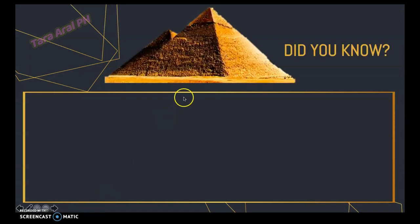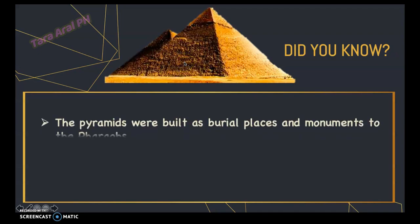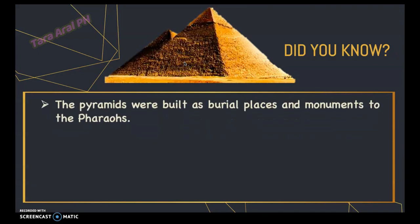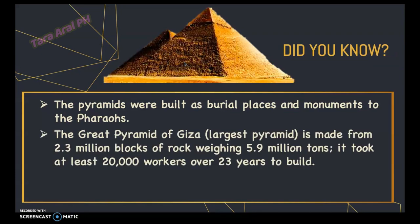Good day everyone. Let's start our lesson with an interesting fact. You can see here a picture — it's a pyramid of Egypt. Did you know that the pyramids were built as burial places and monuments to the Pharaohs? The Great Pyramid of Giza, which is the largest pyramid, is made from 2.3 million blocks of rock weighing 5.9 million tons, and it took at least 20,000 workers over 23 years to build.